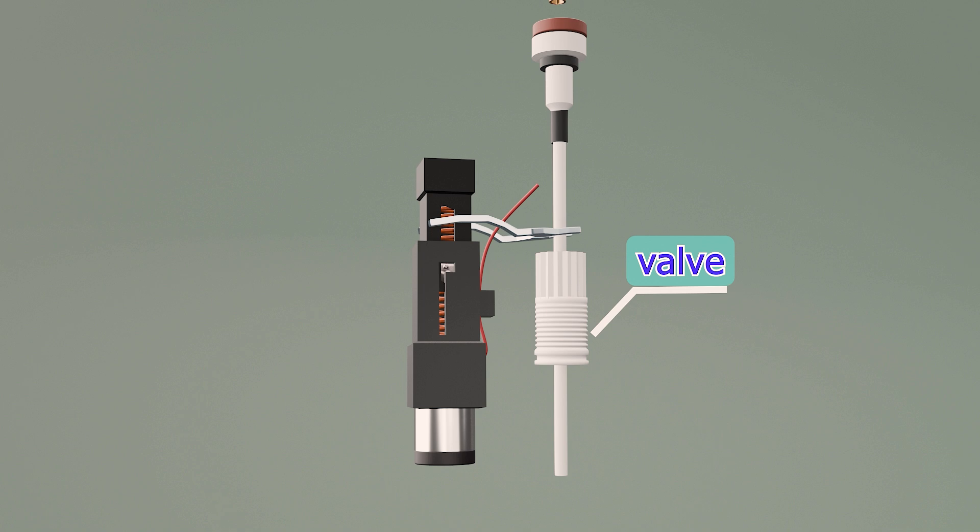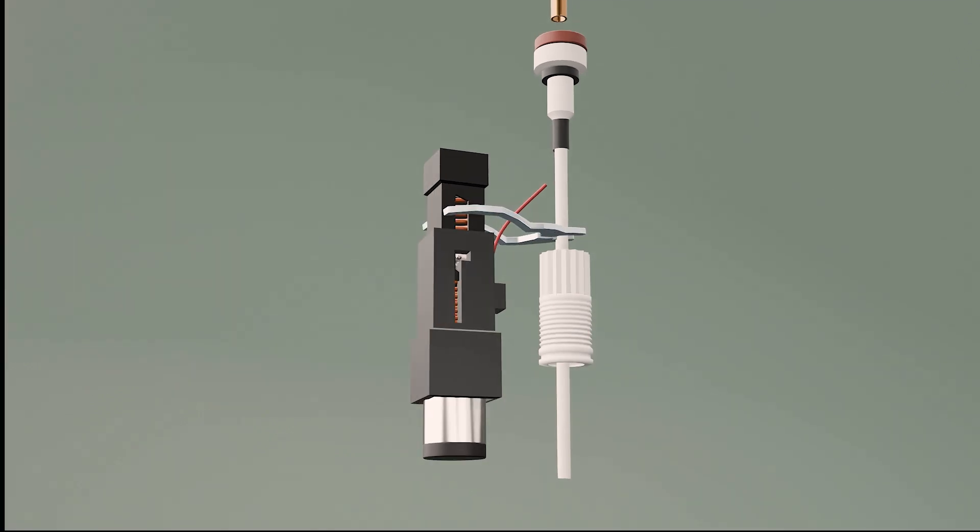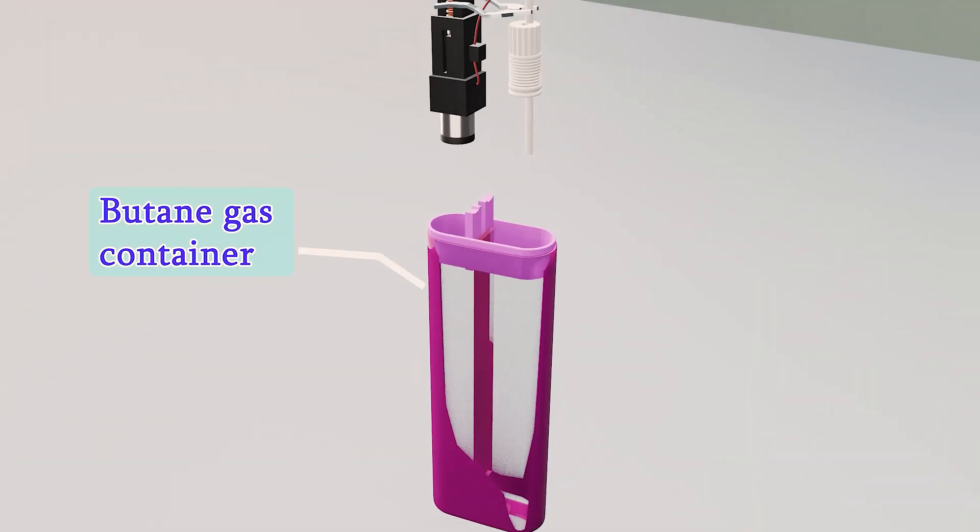Valve releases butane gas when igniting the lighter. Lever pressed to trigger the ignition mechanism. Butane gas container holds the butane fuel, supplying gas to the valve for ignition.